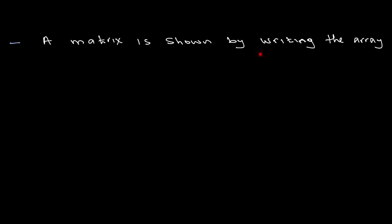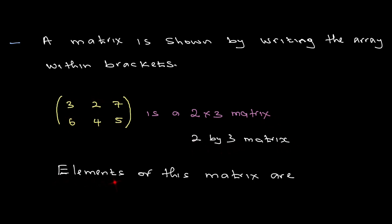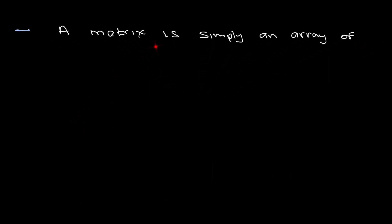A matrix is shown by writing the array within brackets. Here is a matrix. This is the bracket, and this matrix is a two by three matrix - two rows, three columns. The elements of the matrix are three, two, seven, six, four, five. These are the elements of the array. A matrix is simply an array of numbers.